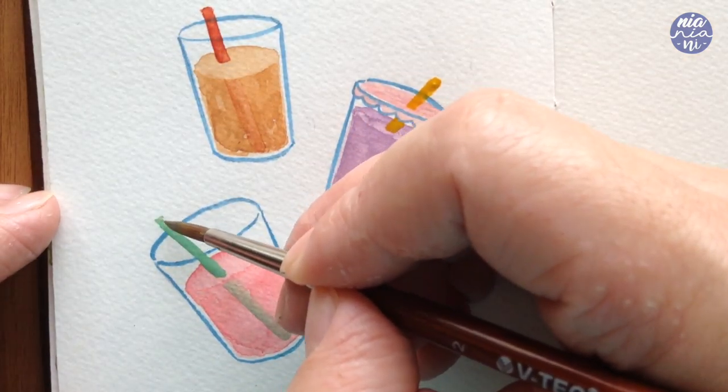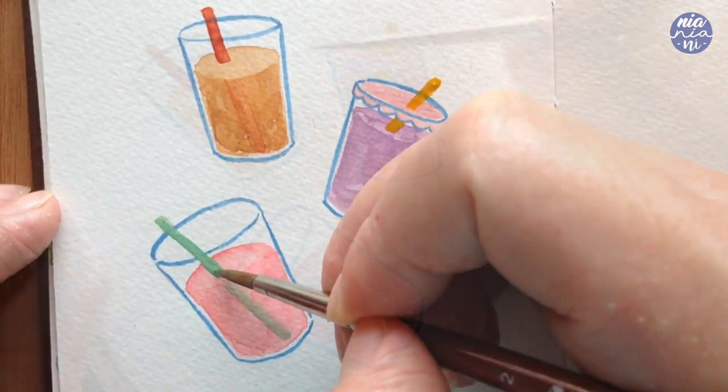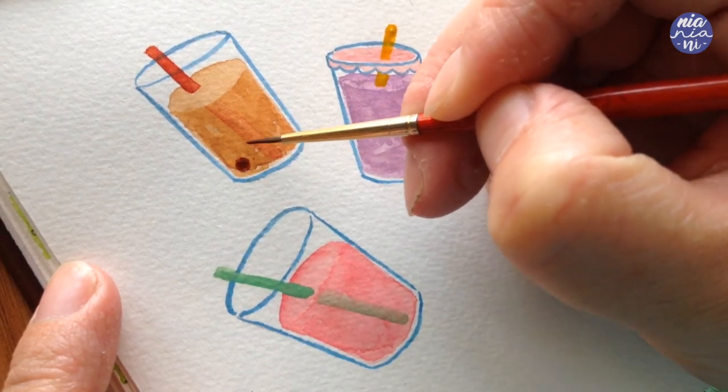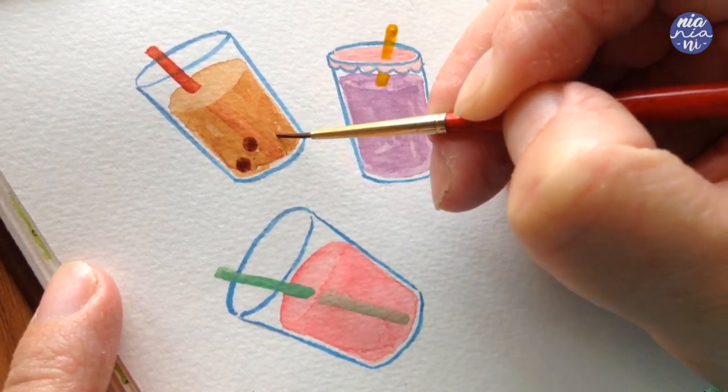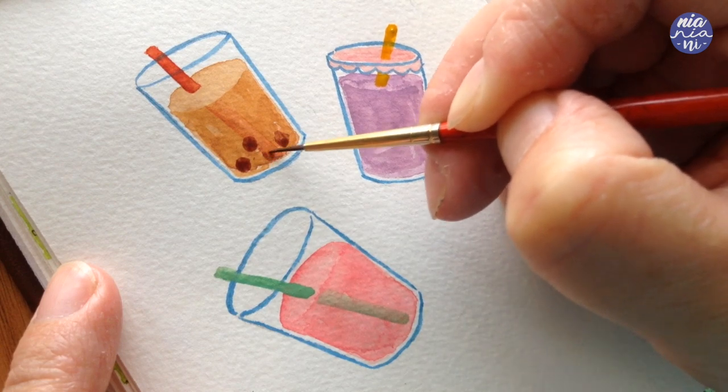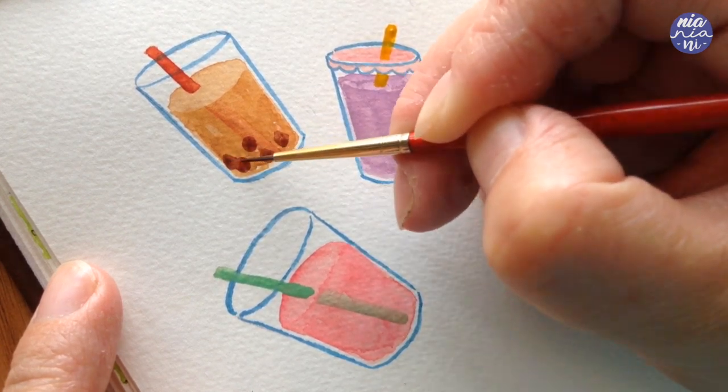Once I'm done painting the straws, I'm going to move along to the bobas. And I'm going to use a medium to thin consistency of the previous color mix from the crimson lake, mineral violet and sepia to paint the bubbles.